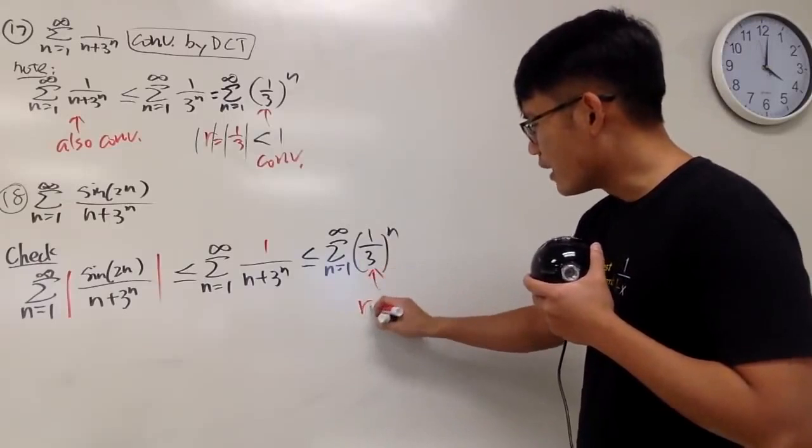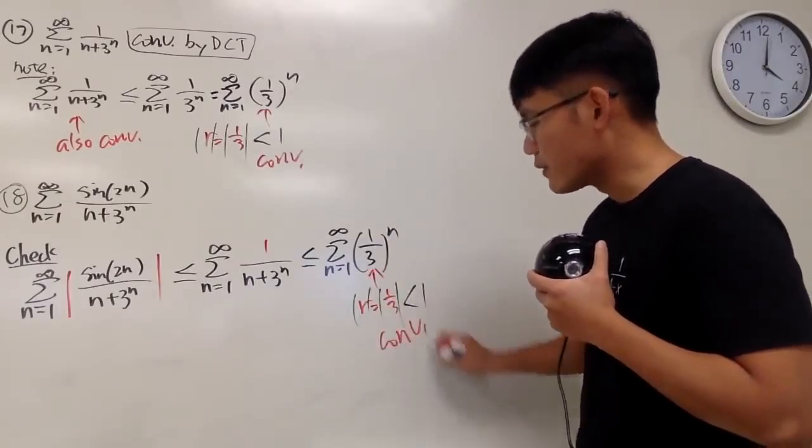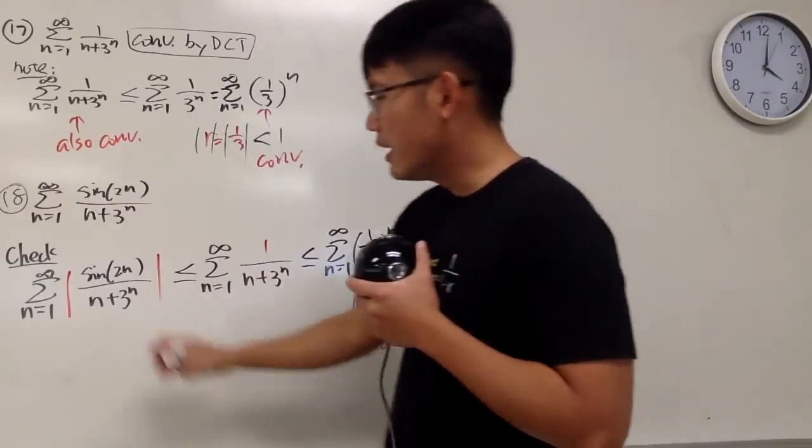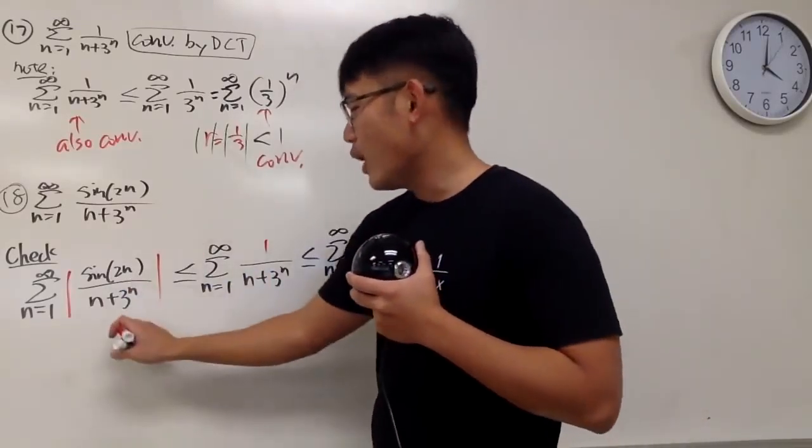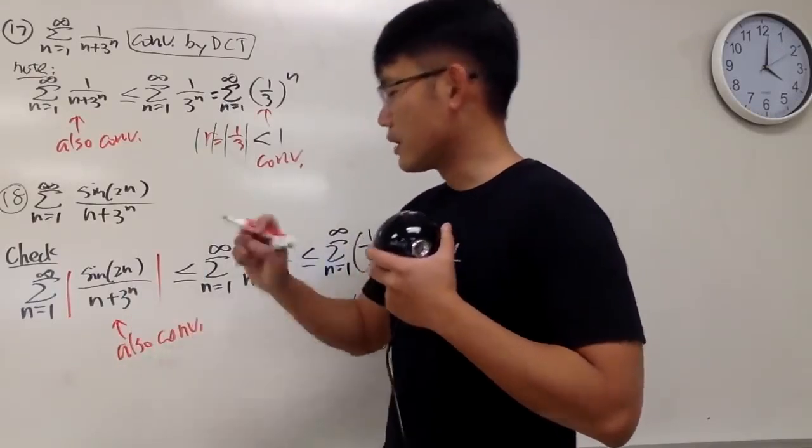Anyway, this right here, you write down r equals one-third, take the absolute value, which is less than 1, which is a convergent, and now you can come back here, and you can say this right here also converges.